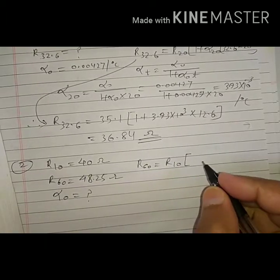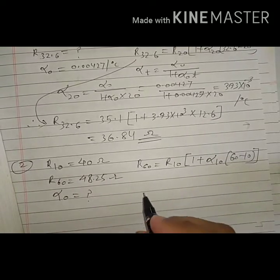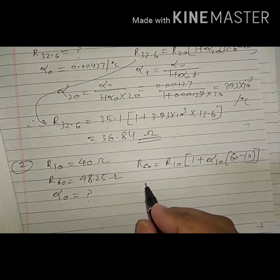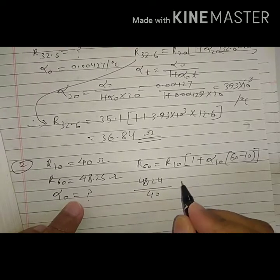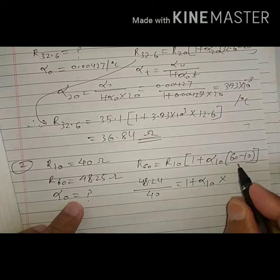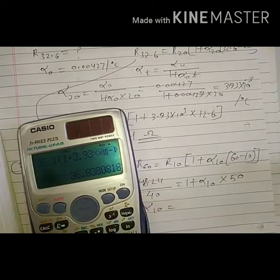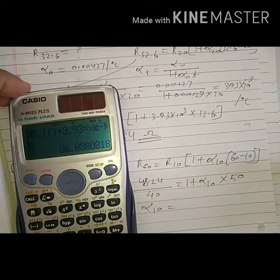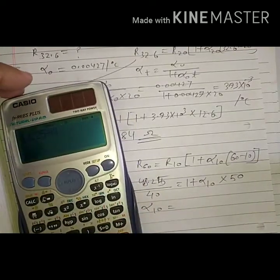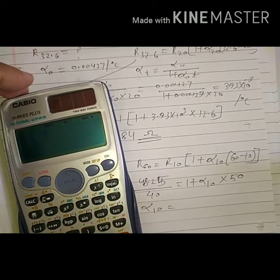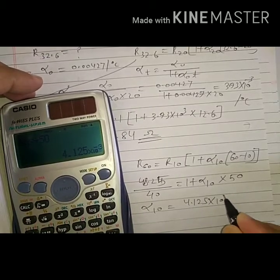Using R₆₀ = R₁₀ × (1 + α₁₀ × (60 − 10)): 48.25 = 40 × (1 + α₁₀ × 50). Solving for α₁₀: α₁₀ = (48.25/40 − 1) / 50 = 4.125 × 10⁻³ per degree Celsius. This is not the final answer; we need α₀.